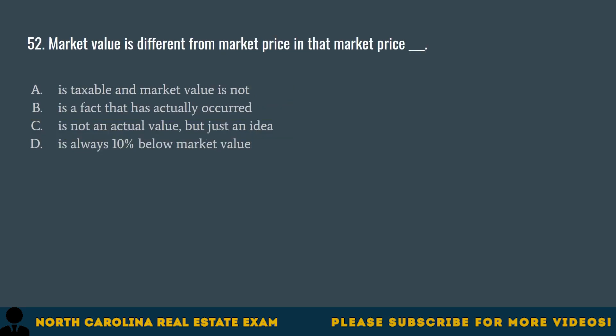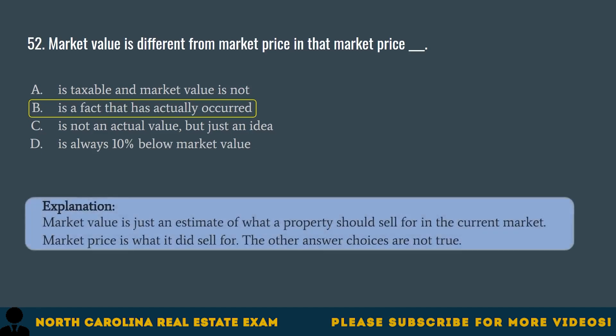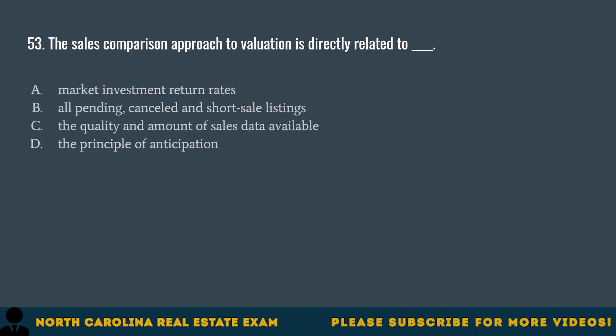Question 52. Market value is different from market price in that market price blank. A. Is taxable and market value is not. B. Is a fact that has actually occurred. C. Is not an actual value but just an idea. D. Is always 10% below market value. The correct answer is B. Is a fact that has actually occurred. Market value is just an estimate of what a property should sell for in the current market. Market price is what it did sell for.